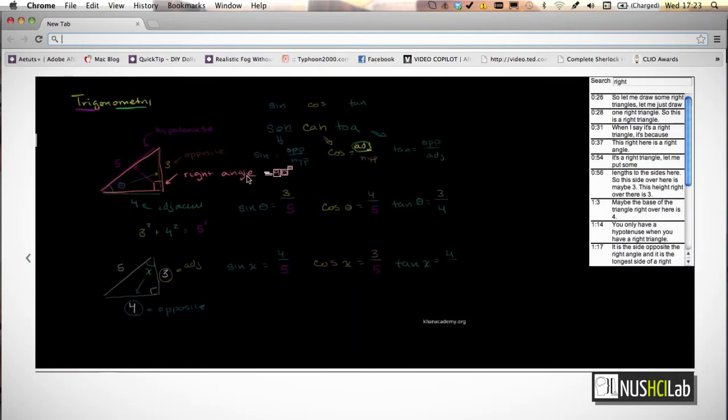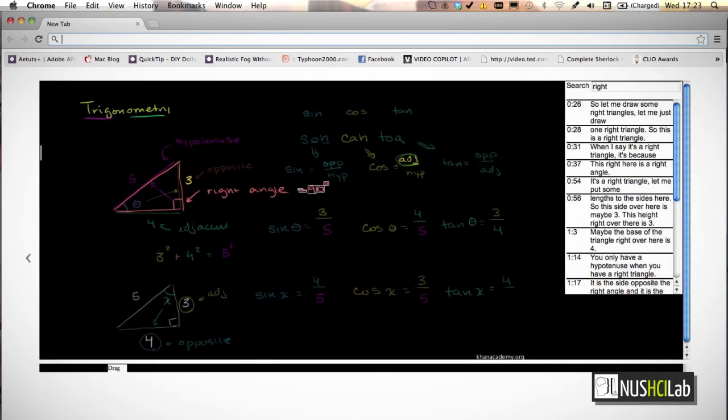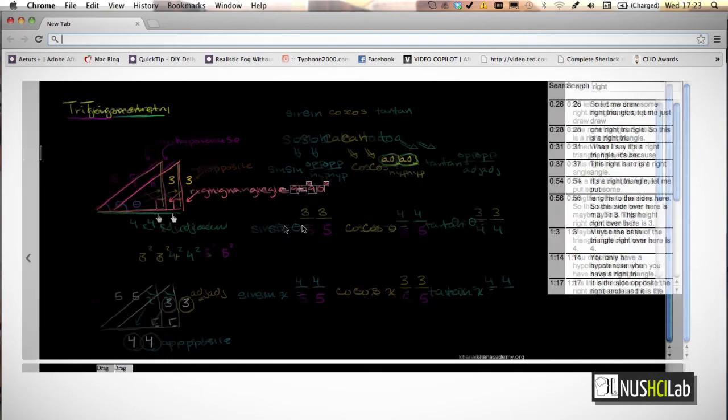High triangle, let me put some lengths to the sides here. So this side over here is maybe 3, this height right over there is 3, maybe the base of the triangle right over here is 4, and then 4.